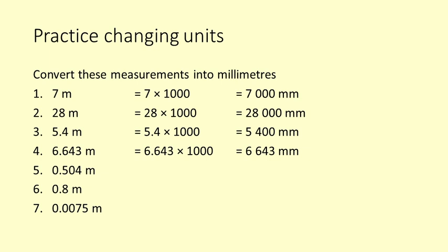6.643 metres times 1000 equals 6643 millimetres. Now we don't have a number before the decimal point, but we still need to treat it the same, so 0.504 metres times 1000 equals 504 millimetres.